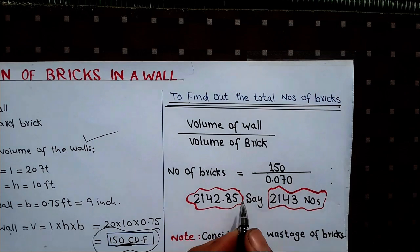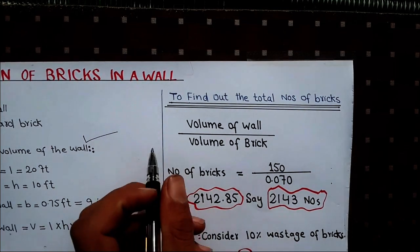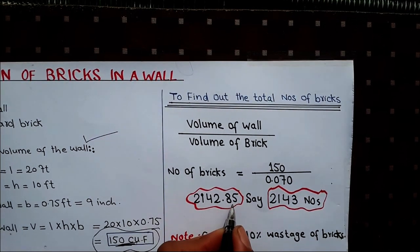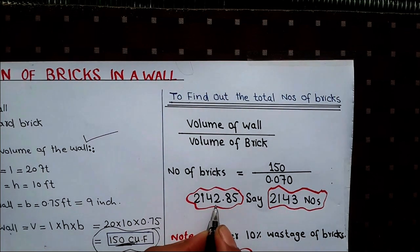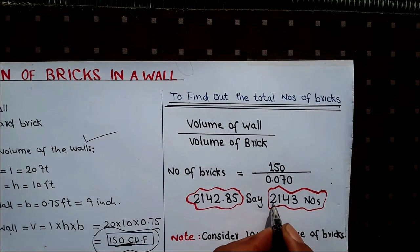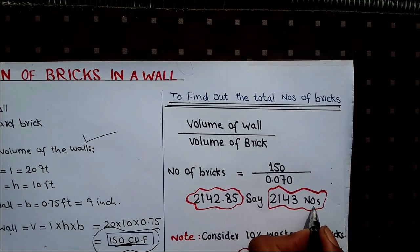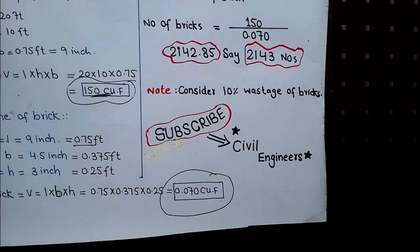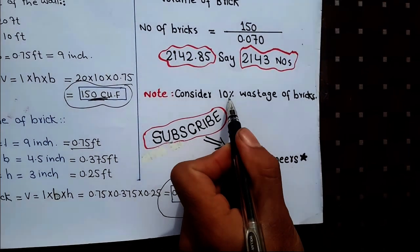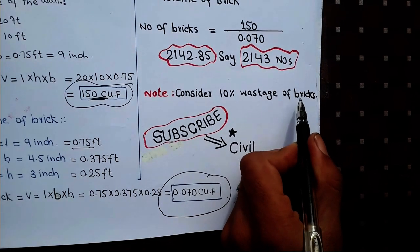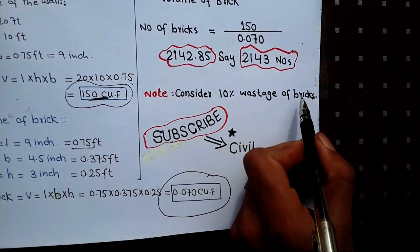So the number of bricks required is 2142.85, which we round up to 2143 bricks required for this wall.